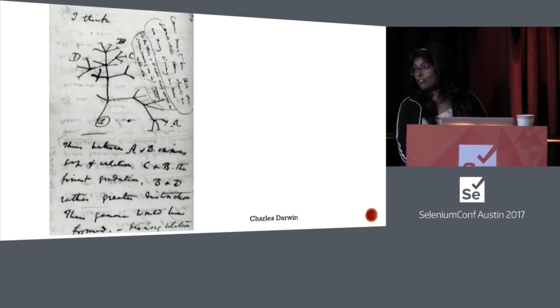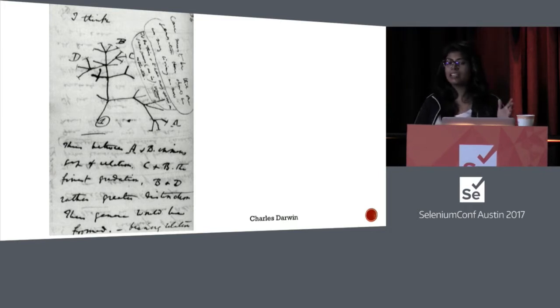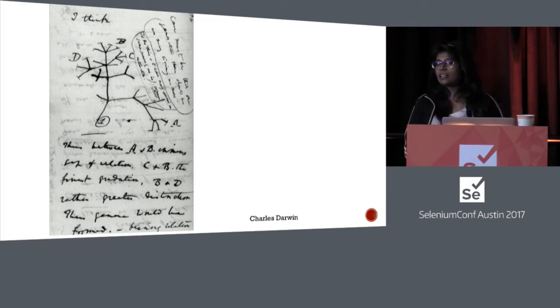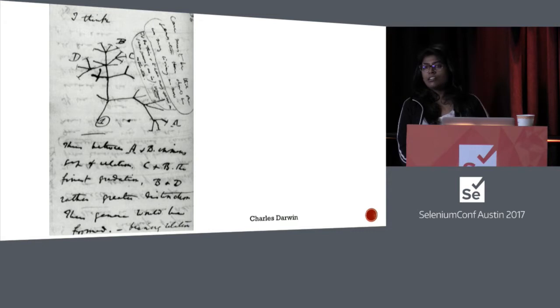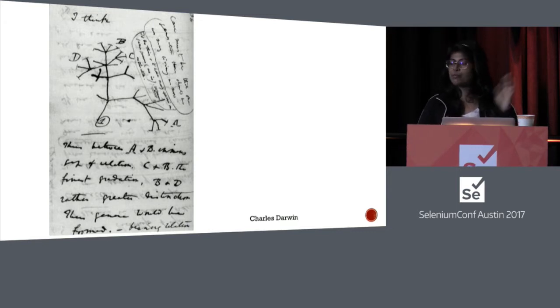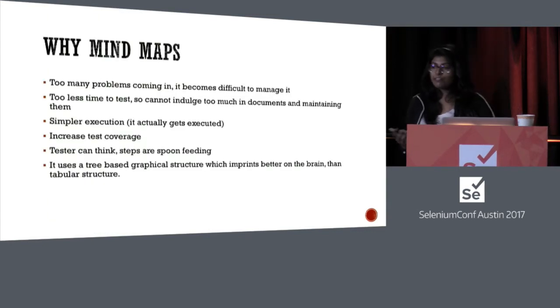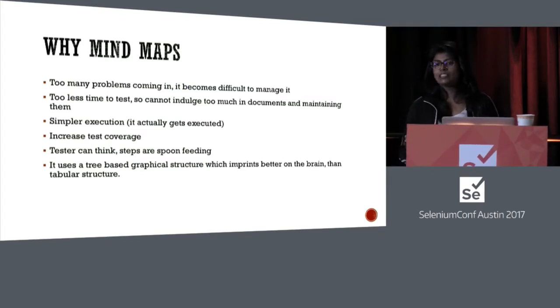Mind maps are not new — they've been around since the third century. This is Charles Darwin's tree of life, which is similar to a mind map. He started realizing that in evolution there are relationships among different species and tried to draw them in a tree-like structure. Recently we've thought: if Charles Darwin could use it, why can't we as testers or quality engineers use it in our day-to-day life?